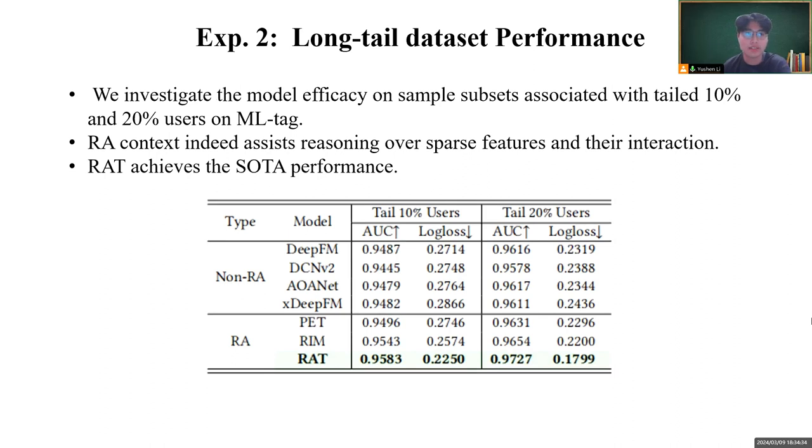Also, we investigate the model efficacy on sample subsets associated with 12% and 20% users on MLTech dataset. We can find RAT methods generally outperform the non-RA methods, which means RAT contexts indeed assist reasoning over sparse features and their interaction. RAT achieves the SOTA performance in this experiment setting.